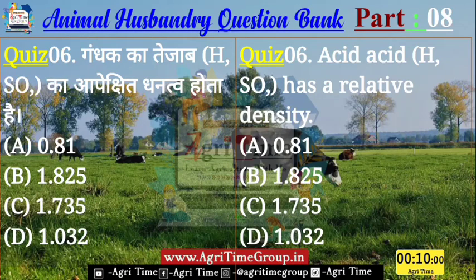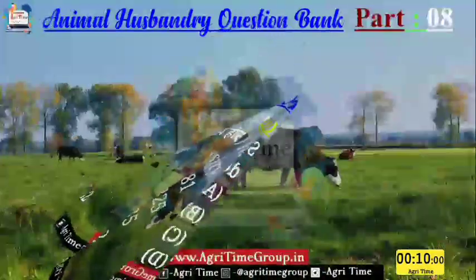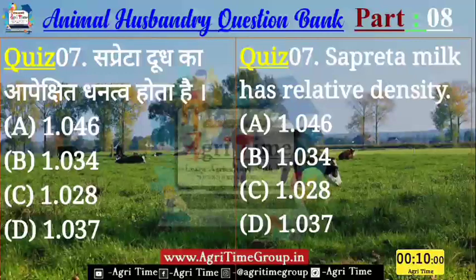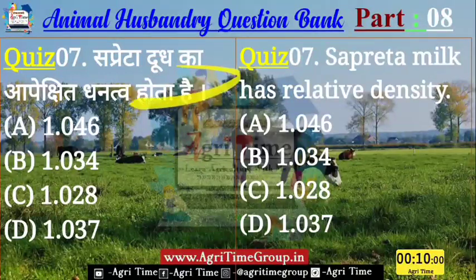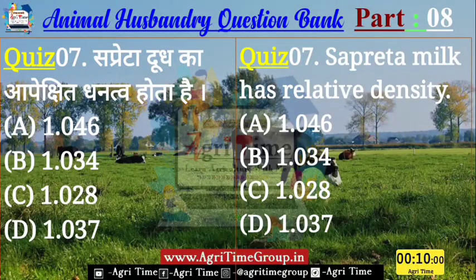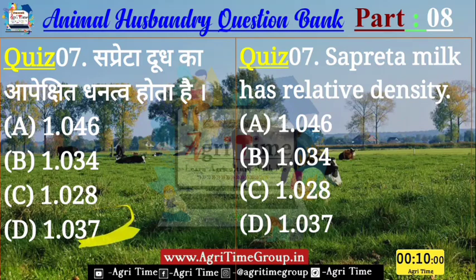Question number 7 — यह रहा आपके screen पर। Skimmed Milk (सप्रेटा दूध) का specific gravity कितना होता है — यह पूछा जा रहा है। Option में यहाँ पे दिये हैं: 1.046, 1.034, 1.028, या 1.037। तो बतलाईए सप्रेटा दूध का specific gravity क्या होता है?